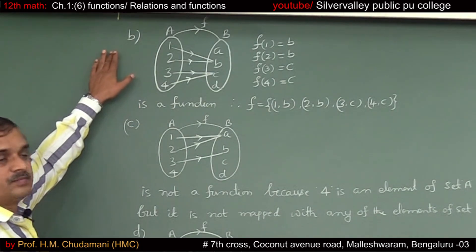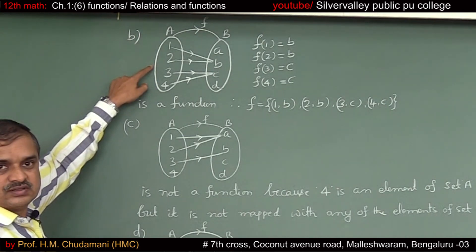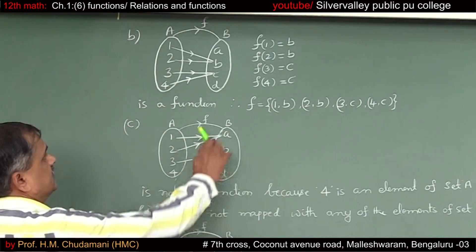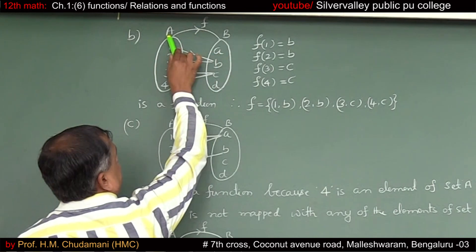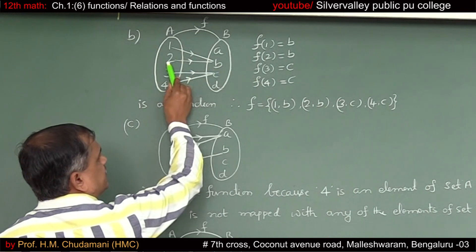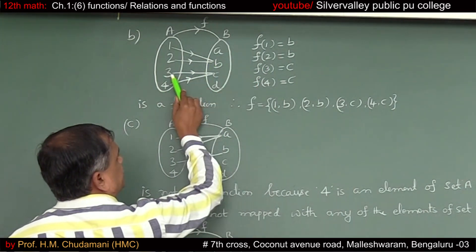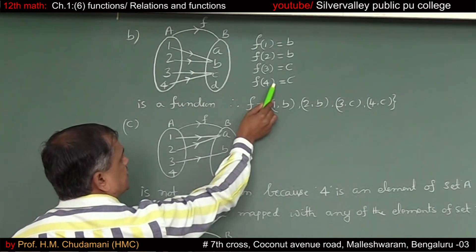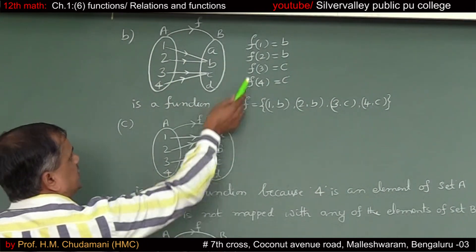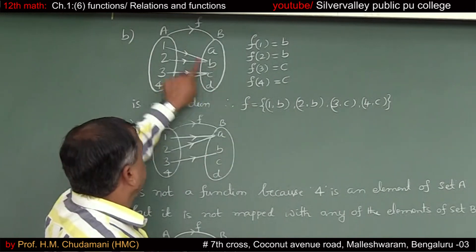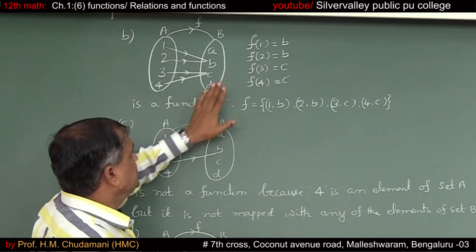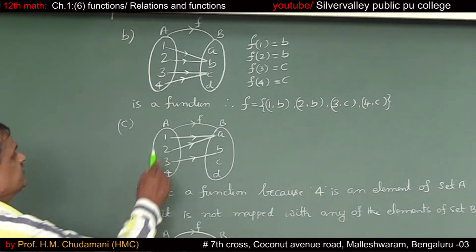Let us take another example. The same set A = {1, 2, 3, 4} and B = {A, B, C, D}. Define a function F from A to B as: F(1) = B, F(2) = B also, F(3) = C, F(4) = C. So 1 and 2 are both associated to B. Clearly, this is a function because every element of set A has a unique image in set B.